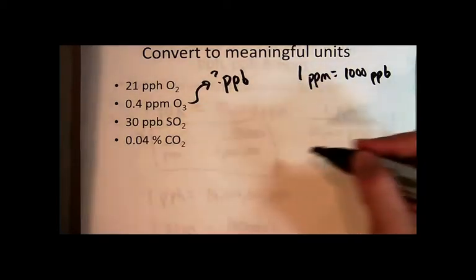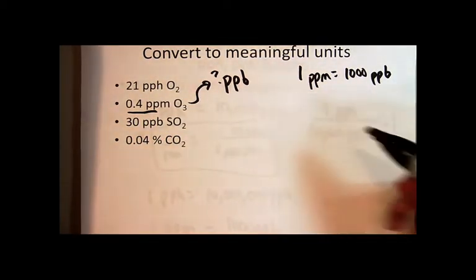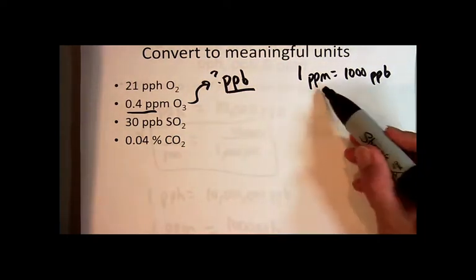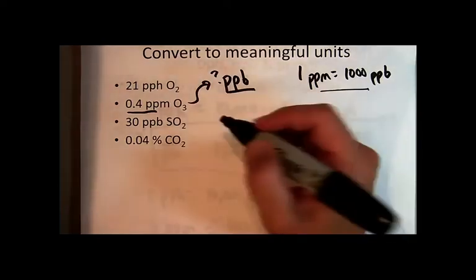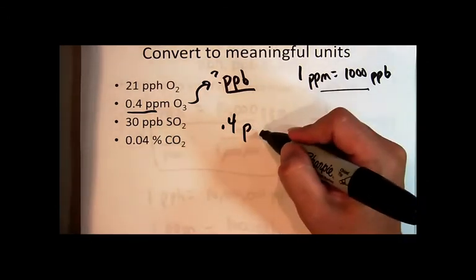So what I can do is just start with what's given, the unit of 0.4 parts per million, and convert to the unit that I want, which is parts per billion, using this expressed as a unit factor. So I'm going to start with what's given: 0.4 parts per million.